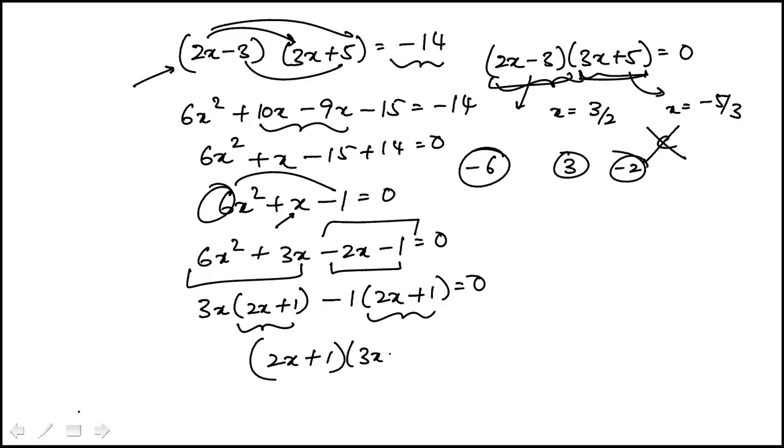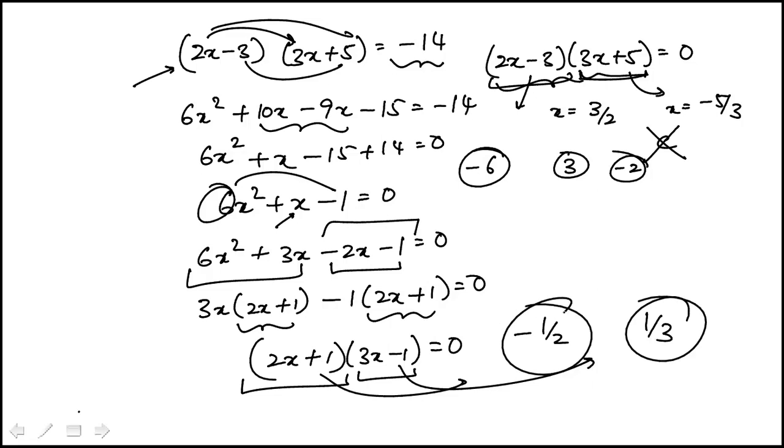So now this is equal to 0, and the solutions would be when each piece is 0. This would be minus half, and that would be 0 when x is 1 third. So the two solutions are minus half and 1 third, which is choice A.